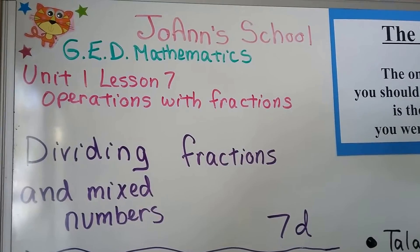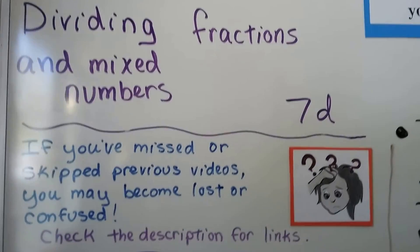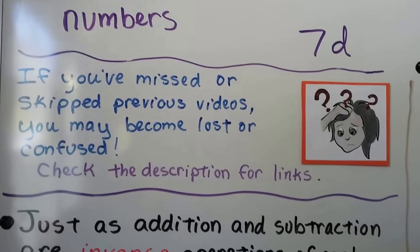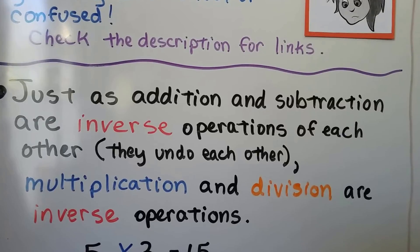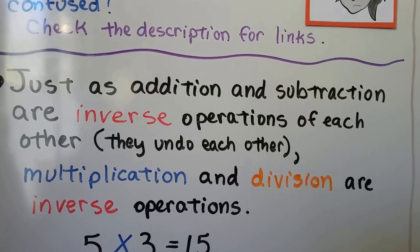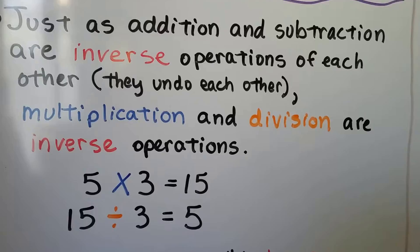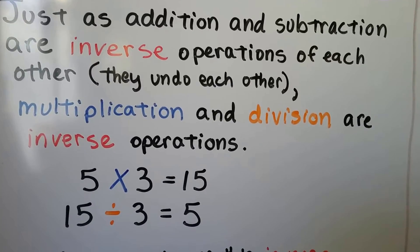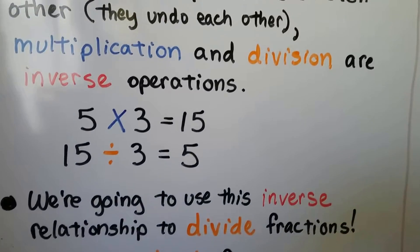Now we're dividing fractions and mixed numbers — this is lesson 7d. If you become lost or confused or you've missed some videos, check the description for links. Just as addition and subtraction are inverse operations — they undo each other — multiplication and division are inverse operations too. For example, 5 times 3 equals 15, and we can take that 15 and divide it by 3 and get the 5 again.